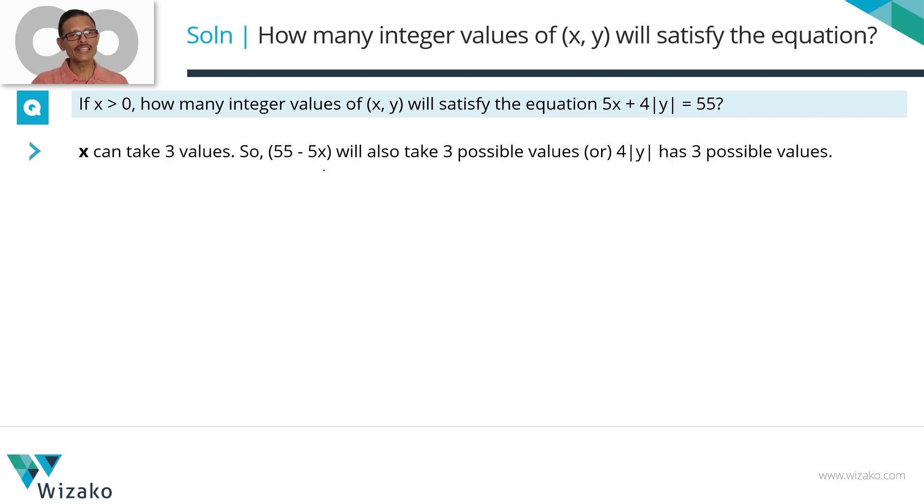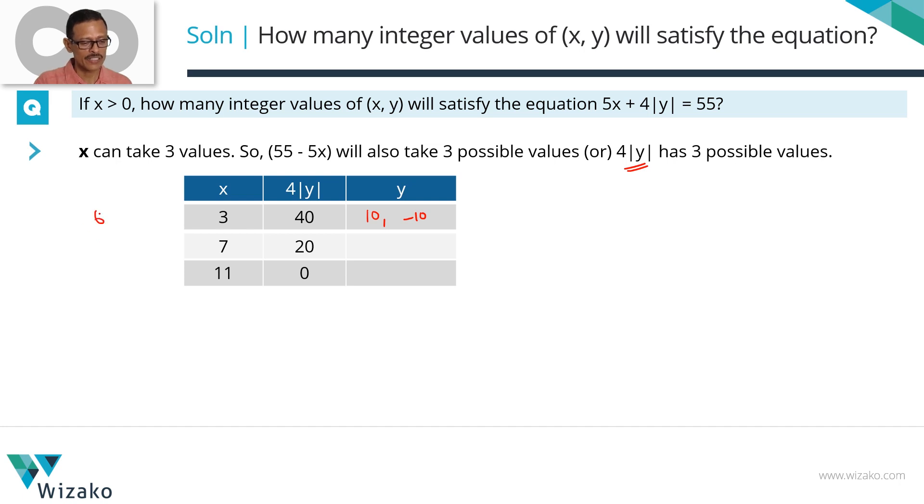Why so? 55 - 5x has got three values which are 40, 20 and 0. Those are the values that 4|y| takes. So if 4|y| = 40, |y| = 10. Y could take two values which are 10 and -10. For each of these values we'll have two possible values for y. If 4|y| = 20, |y| = 5. So y is therefore 5 or -5. Good till this point. If 4|y| = 0 then |y| = 0. There is no negative 0. There is only one value which is plus 0. So we do not have six values for y. We have only five possible values for y.